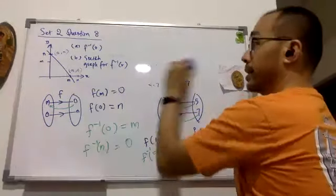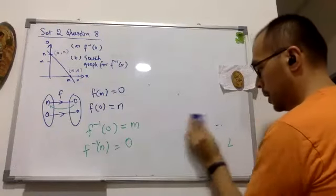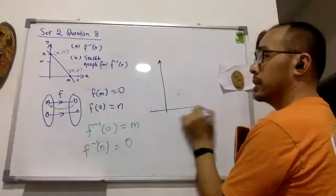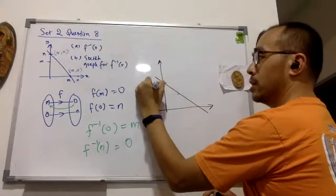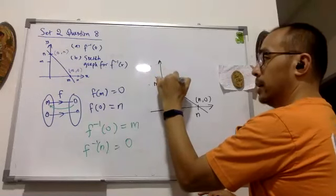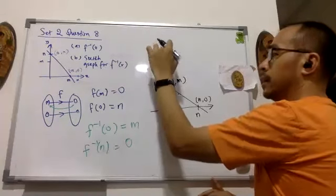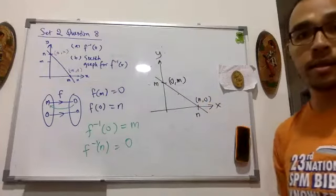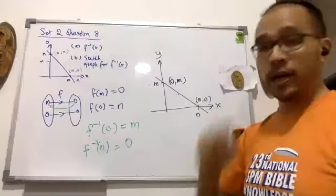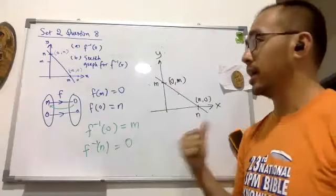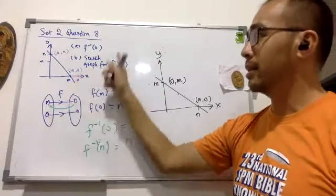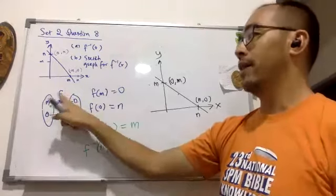The answer for the graph would naturally be the inverse of this. It will still be the same except that this coordinate will now be (m, 0) and this one will be (0, m), with the axes being x and y. I hope this helps. I think the simplest way to understand this is by using the mapping method. If you map m through the function f, you will get 0.